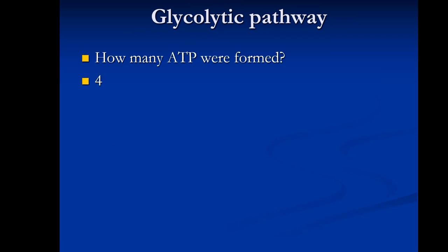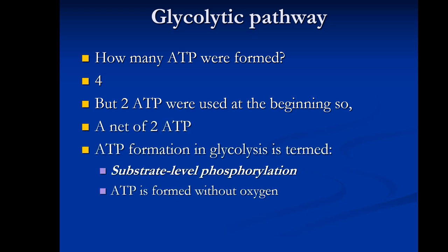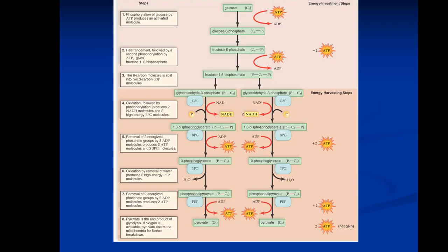In total, four ATP are generated but two ATP are used at the beginning, giving a net ATP gain of two. When we make ATP this way, we call it substrate-level phosphorylation, meaning ATP is formed without directly using oxygen. The two NADH produced carry two hydrogens each (as NADH + H⁺), and those hydrogens are later donated to convert pyruvate to lactate.